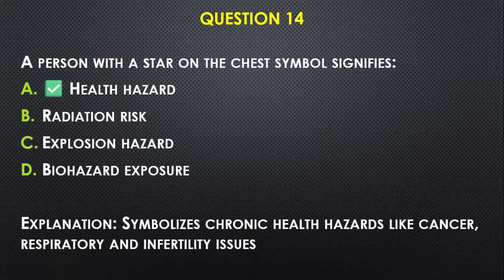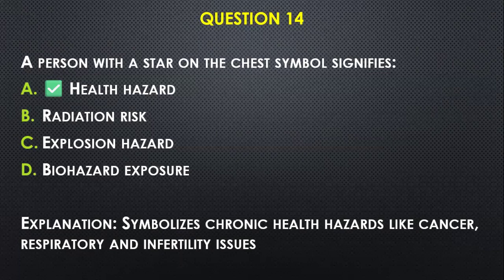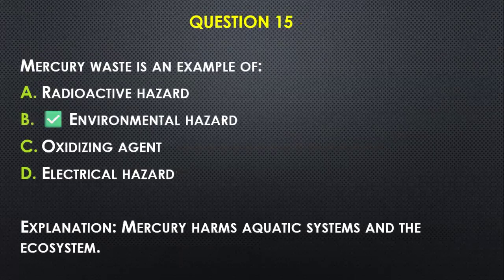Question number fourteen: A person with a star on the chest symbol signifies — A) health hazard, B) radiation, C) explosion hazard, D) biohazard exposure. We go with A, because that represents chronic health hazards like cancer, respiratory, and fertility issues. The skull and crossbones represents acute toxicity, while the person with a star on the chest signifies chronic health hazards.